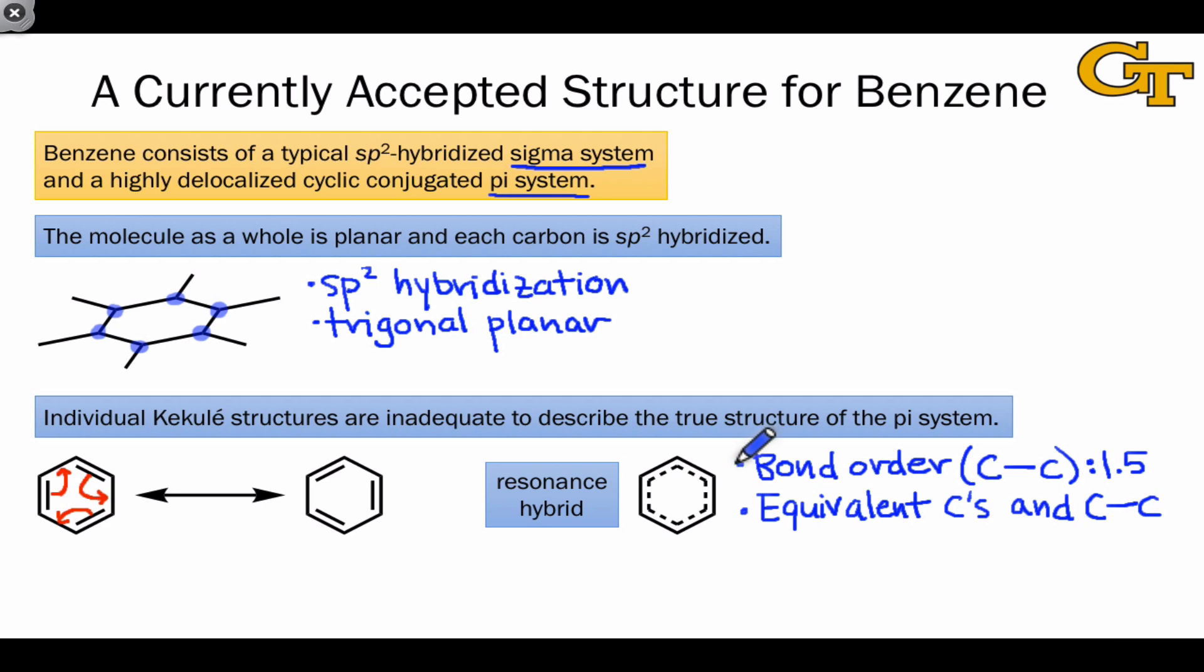This resonance picture, and especially the resonance hybrid, helps us see why benzene doesn't really behave like an alkene. It's not accurate to think about the pi electrons in benzene sitting in three isolated double bonds. Instead, it's better to think about those pi electrons as delocalized over all six carbons within the molecule.